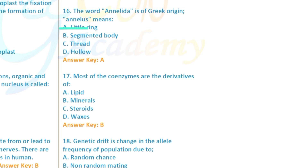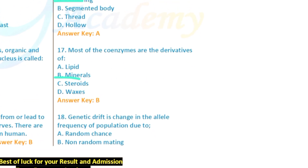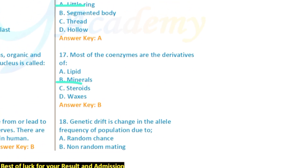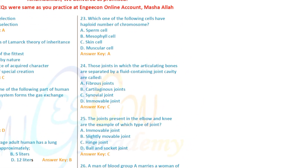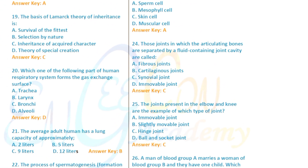Regarding Mendel's laws — question 18: Genetic drift is the change in allele frequency in a population due to random chances, so option A (random chance) is ticked. Question 19: The basis of Lamarck's theory of inheritance.